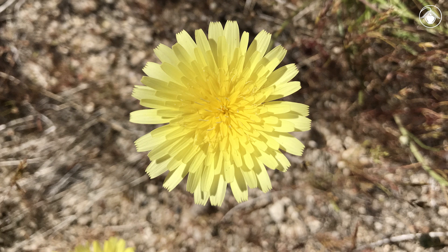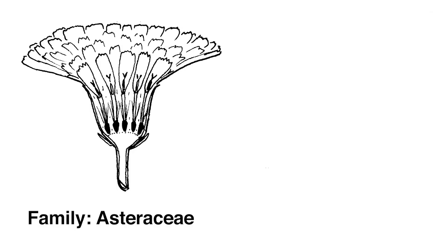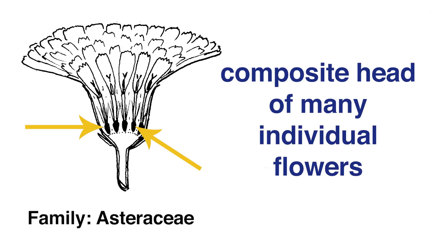Malacothrix glabrata is in the Asteraceae, or aster family. In this family, what looks like one flower is actually a composite head of many individual flowers.